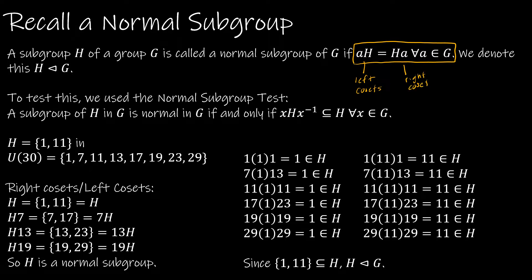We showed normality by showing that the two cosets were the same. We also used the normal subgroup test, which used conjugation — that is, showing that XHX-inverse is a subset of H.